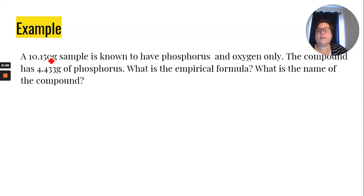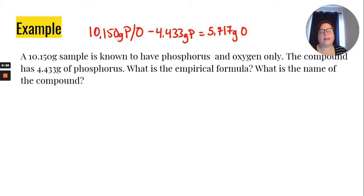All right, here's our second example. We have the mass of the compound, which contains phosphorus and oxygen. It tells us the mass of the phosphorus so we can subtract to find the mass of the oxygen. So instead of giving us percents this time, they went ahead and gave us the mass. We're still going to follow the same three steps.